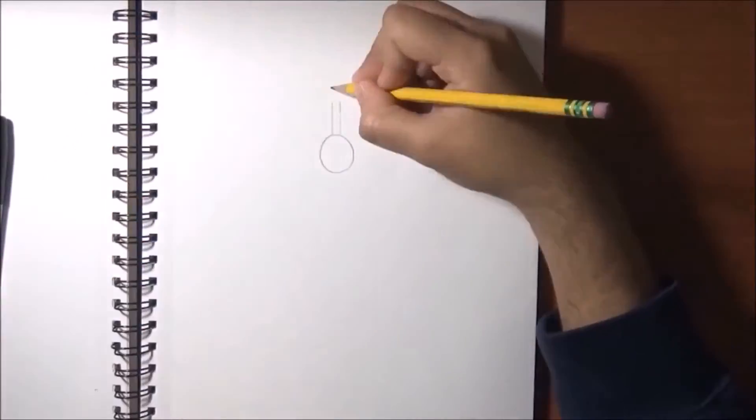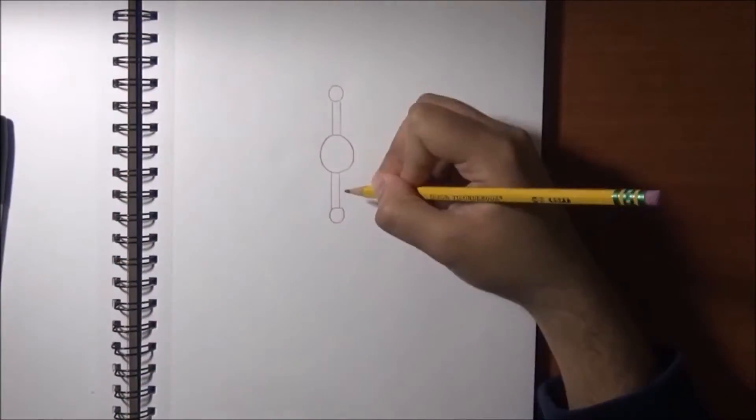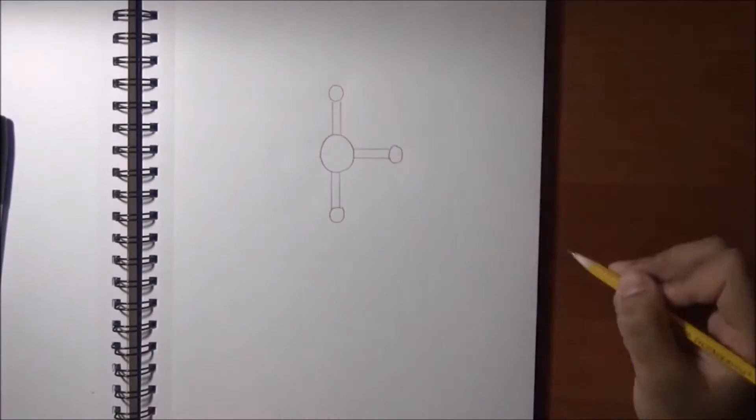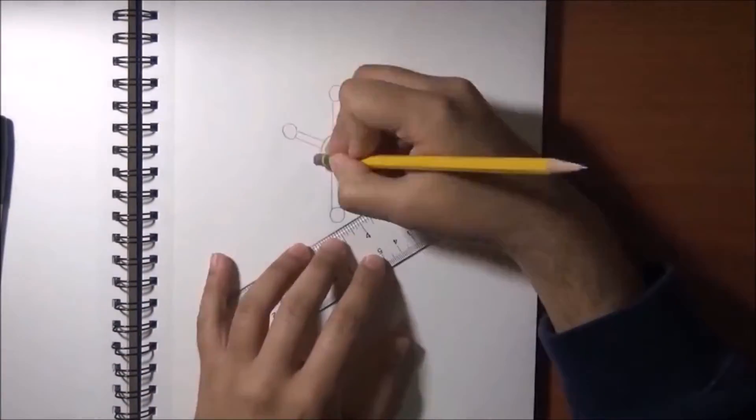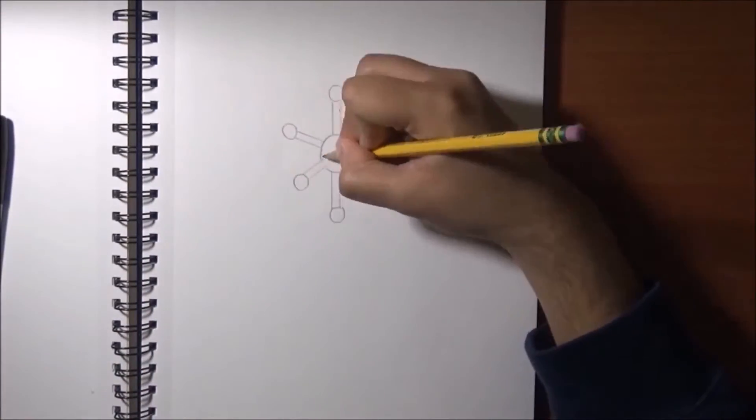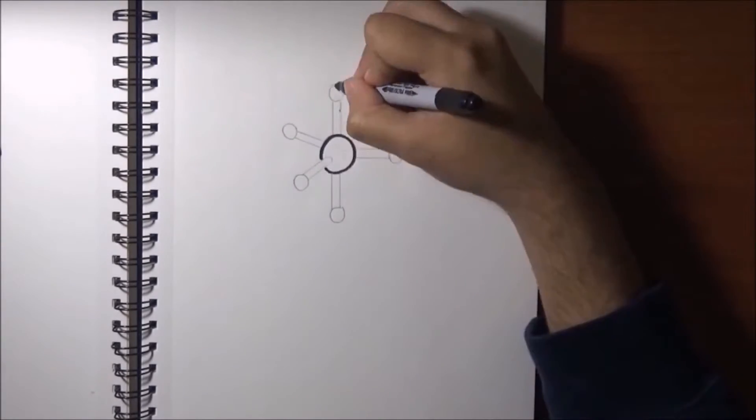The trigonal bipyramidal shape consists of a central atom attached to five other atoms. This shape is considered nonpolar if the atoms attached to the central atom are all the same, making the shape symmetrical.